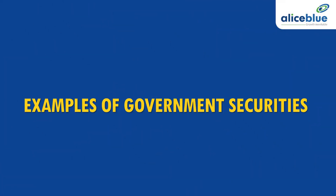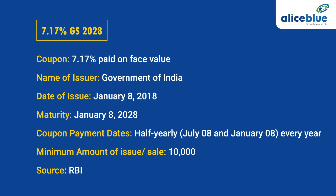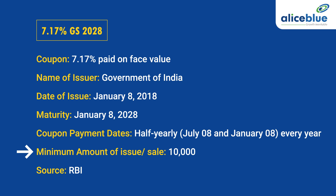Let me give you a few examples of government securities. The nomenclature of a government security displays pretty much everything about a particular GSEC. A dated government security with a fixed rate will be displayed like this: 7.17% GS 2028. It contains the following features — coupon: 7.17% paid on face value; name of issuer: Government of India; date of issue: January 8, 2018; maturity: January 8, 2028; coupon payment dates: half-yearly, i.e. July 8th and January 8th every year; minimum amount of issue/sale: Rs. 10,000; source: RBI. In case there are two securities with the same coupon maturing in the same year, one of them will have the month attached as a suffix in the nomenclature.